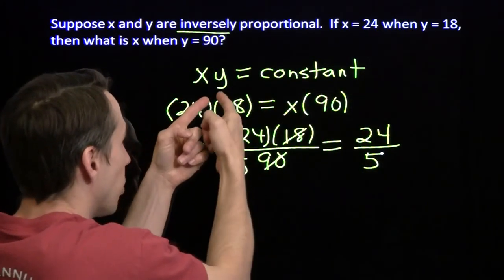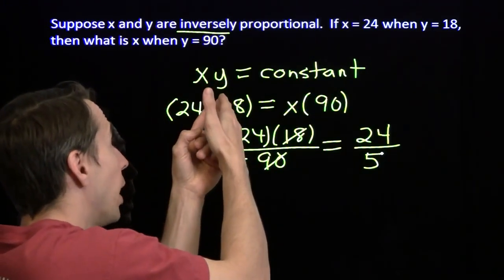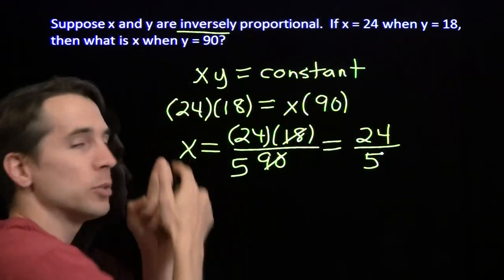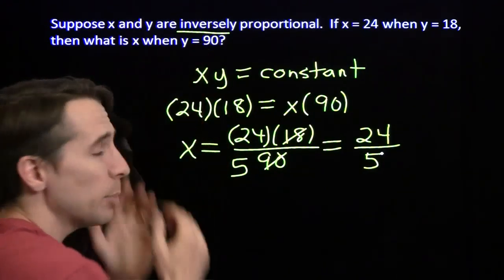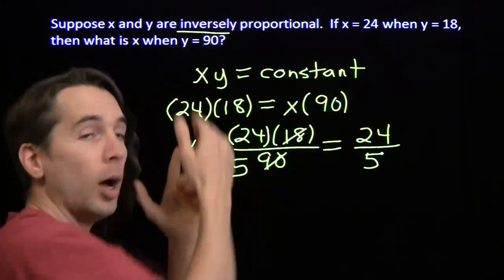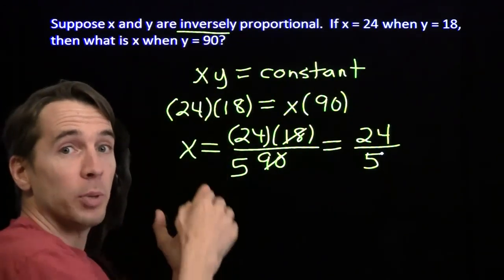That makes sense when we look back at this equation. We want xy to stay constant. So if we multiply y by 5, we need to divide x by 5 to keep this product constant. We can think about inverse proportionality with scaling, just like we did with direct proportion. We scale y up by some factor, we have to scale x down by that factor to keep this product constant.